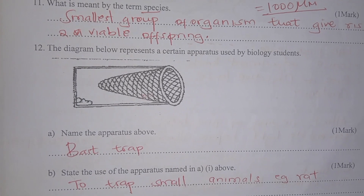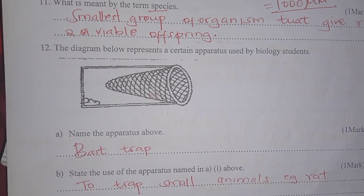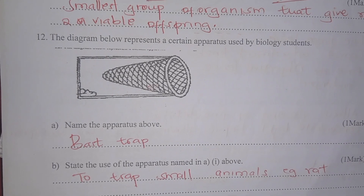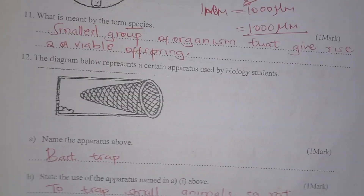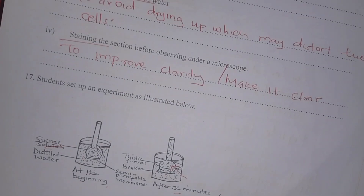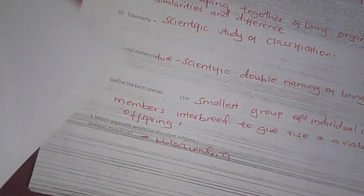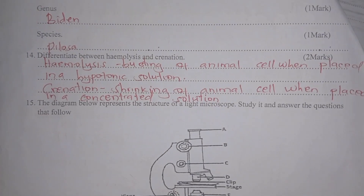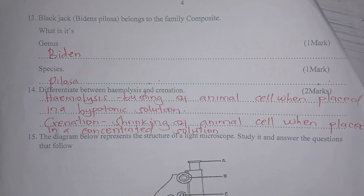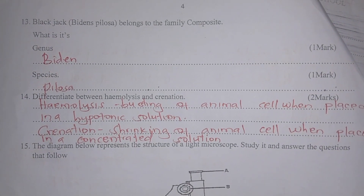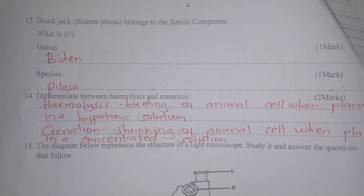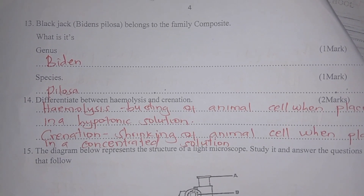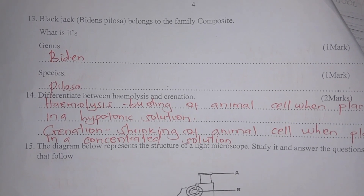You are given an apparatus — name it. It is a bait trap and it is used to catch small animals, for example rats. Blackjack, or Bidens pilosa, belongs to the family Compositae. What is its genus? The genus is Bidens and the species is pilosa.